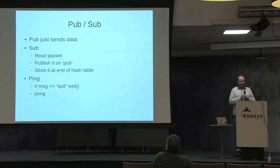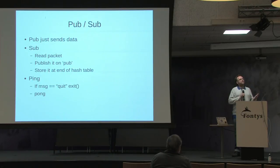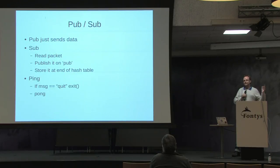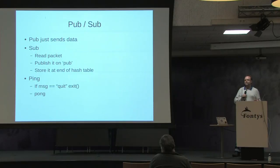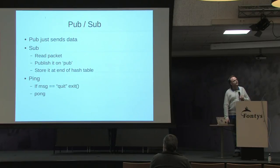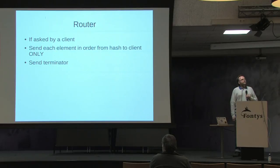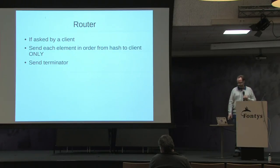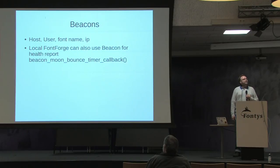The publisher sends out everything coming from clients to the server. The subscriber reads a packet, broadcasts it on the publisher, and stores it in a hash table. The keys in the hash table are the sequence numbers of the packets, making it an ordered structure. With the ping socket you can also send a message like "please quit" to tell the server to shut down. The difference between the publisher and the router is that the router is one-to-one — you don't want to send a complete font state to 30 people just because one new person joined.